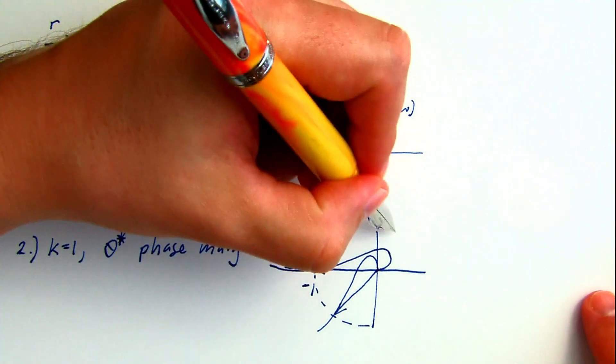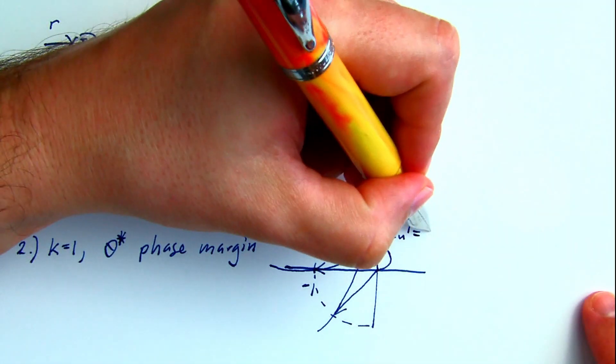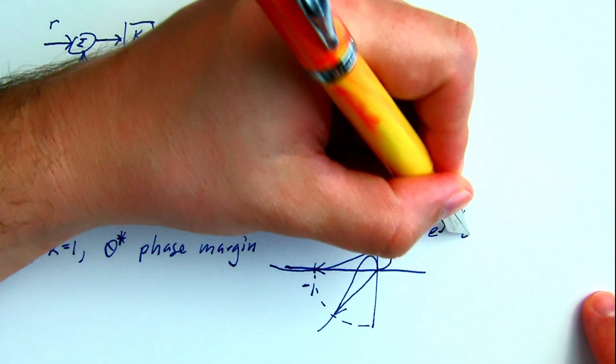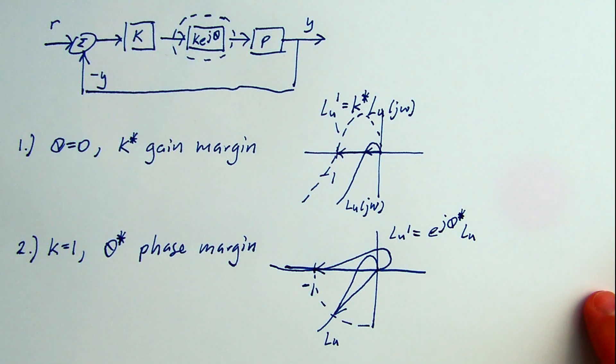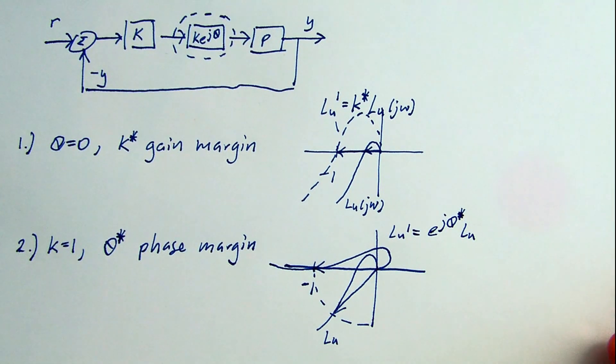That would create a loop gain that looks something like that, where we set the gain k equal to one, since we're looking at pure rotation here. That leads to the phase margin theta star.